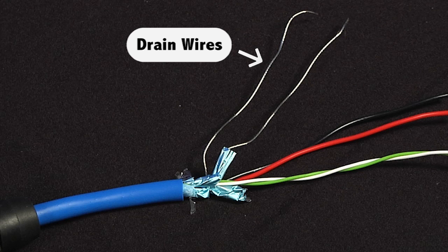Now locate the drain wires and separate them from the rest of the wires. If you are using armored cable, at this point you would proceed to put the gland together and attach it to the device.